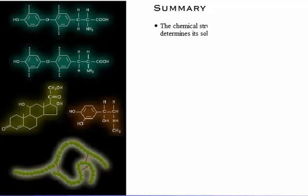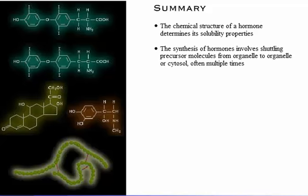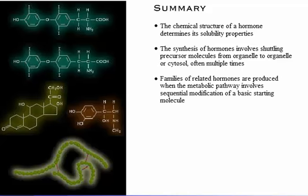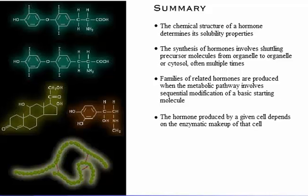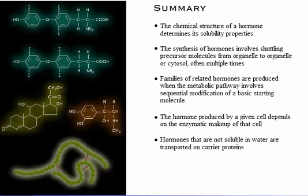Here's a summary of what we've covered. The chemical structure of a hormone determines its solubility properties. The synthesis of hormones involves shuttling precursor molecules from organelle to organelle or cytosol, often multiple times. Families of related hormones are produced when the metabolic pathway involves sequential modification of a basic starting molecule. The hormone produced by a given cell depends on the enzymatic makeup of that cell. Hormones that are not soluble in water are transported on carrier proteins. Blood levels of most hormones vary widely throughout the day.